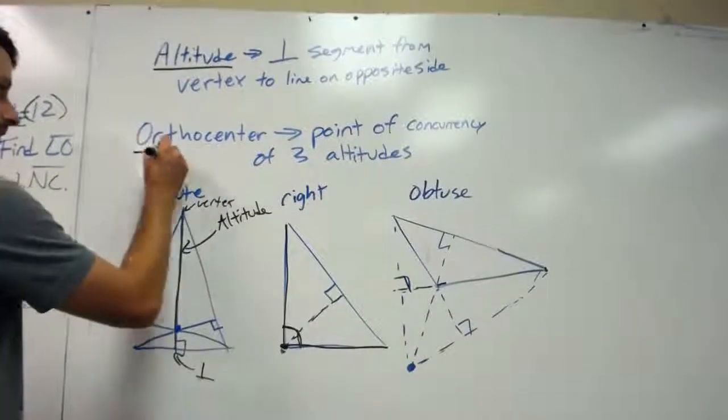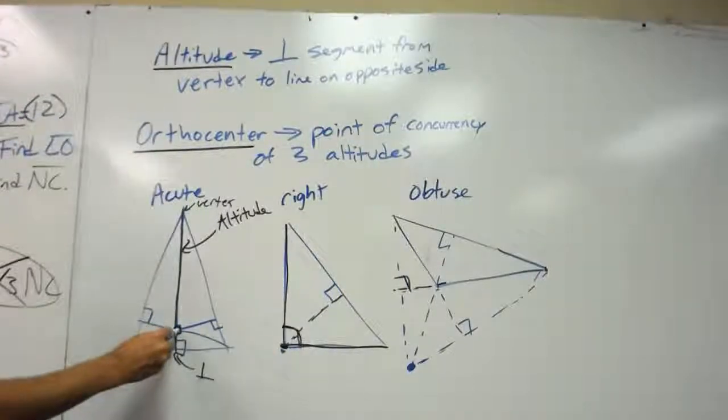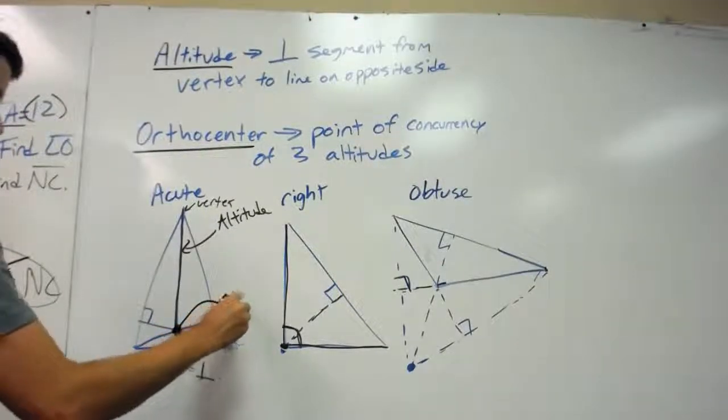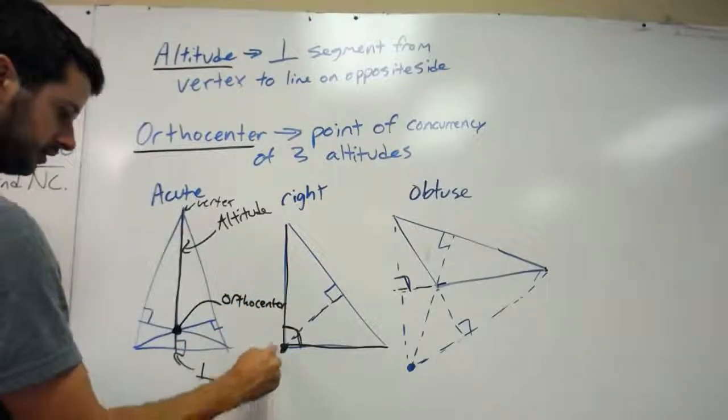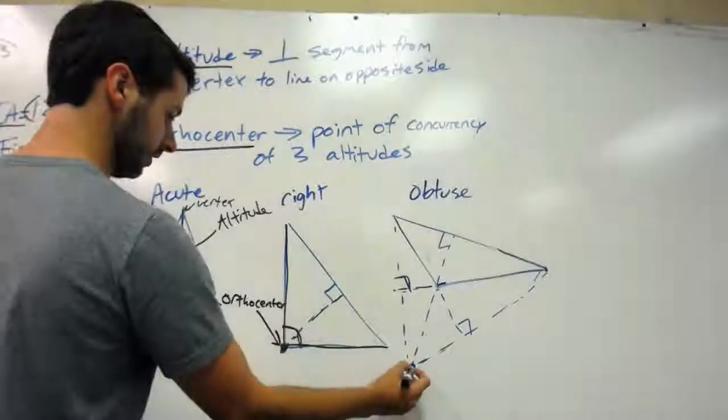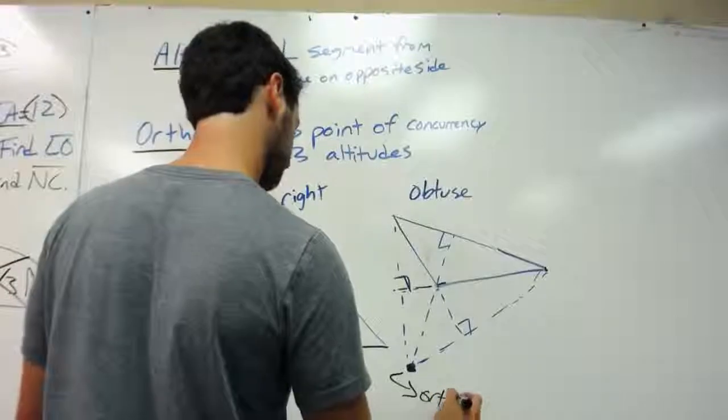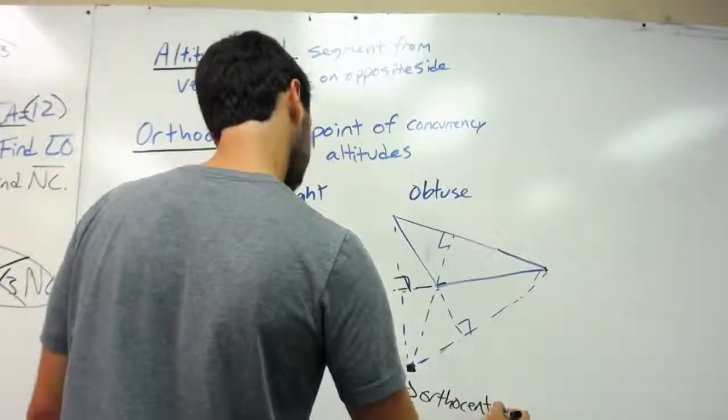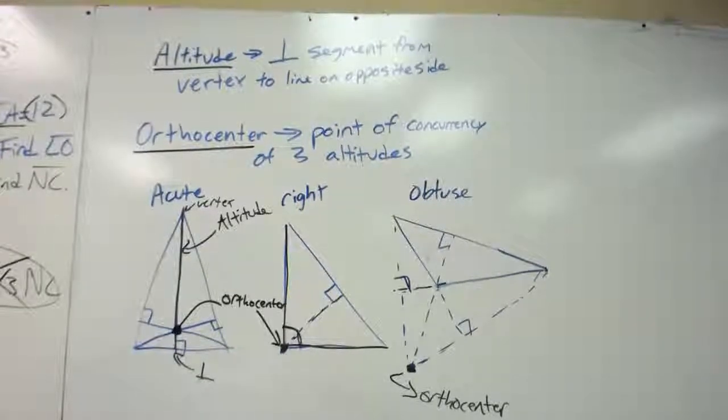And then orthocenter is the point of concurrency of all three altitudes. So here is an orthocenter. Here is an orthocenter. And our orthocenter on the obtuse triangle is actually exterior to the triangle. But those are the definitions you need to know. And that is all that we will do in Lesson 32.